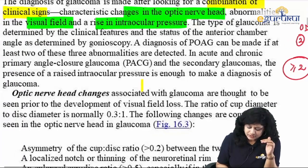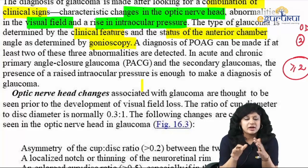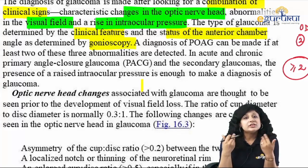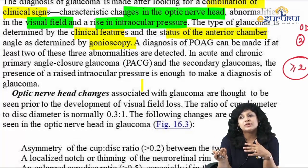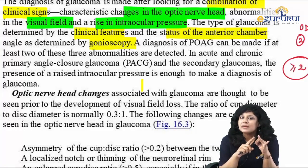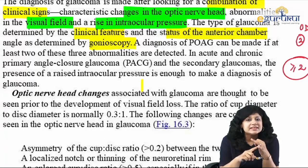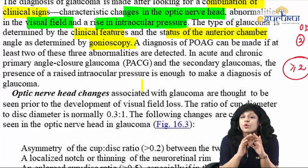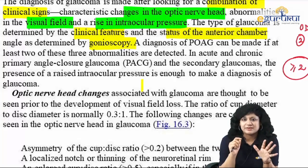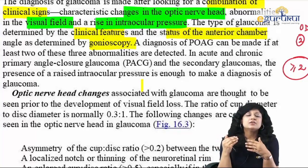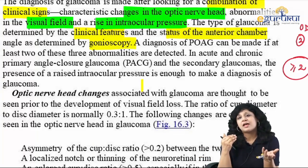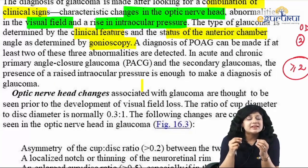The type of glaucoma is determined by clinical features and the status of the anterior chamber by gonioscopy. Once you've confirmed glaucoma with raised IOP, optic disc changes, and visual field defects, gonioscopy tells you the type. Gonioscopy — gonio means angle, scopy means visualization. When visualizing the angle of the anterior chamber and able to see all five structures, it is an open angle; if having glaucoma with open angle, it is open angle glaucoma.